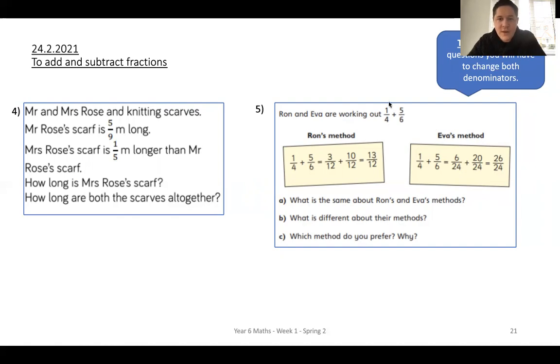These ones here. Ron and Eva are working out one-quarter add five-sixths. Ron's method is one-quarter add five-sixths equals three-twelfths add ten-twelfths equals thirteen-twelfths. So, he's converted to twelfths. Eva's method was one-quarter add five-sixths equals six-twenty-fourths, add twenty-twenty-fourths equals twenty-six-twenty-fourths.